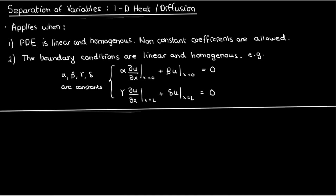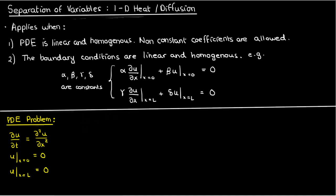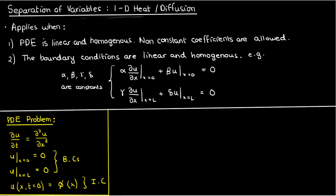Now that we've gone over the requirements for separation of variables, let's go over how it actually works, particularly in the context of a 1D heat or diffusion problem. The PDE is the standard 1D diffusion equation: du/dt equals the second derivative of u with respect to x. The two boundary conditions have u equal to zero at both ends of the domain — these are Dirichlet boundary conditions — and the initial condition has u at time zero equal to some arbitrary function of x, which we'll call phi. Both the PDE and the boundary conditions are linear and homogeneous, so separation of variables applies.